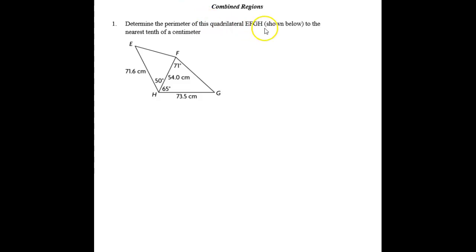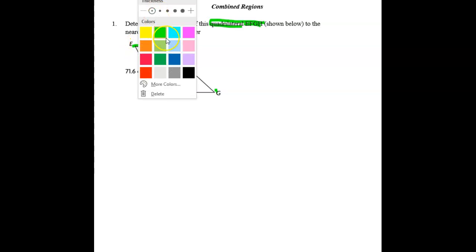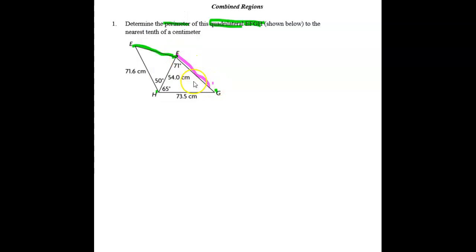Reminder, quadrilateral is a four-sided figure, and you name it by its vertices or corners. So you have EFGH, this four-sided figure, and we want the perimeter. The perimeter is the distance that goes around an object, and we have two sides out of four. So we don't know EF, and we don't know FH.